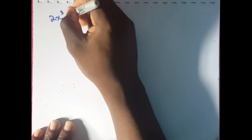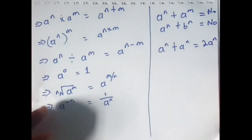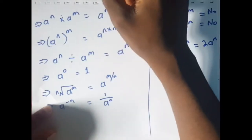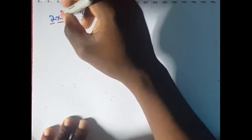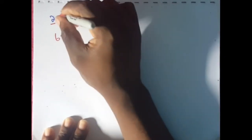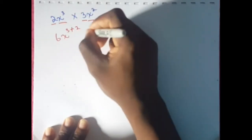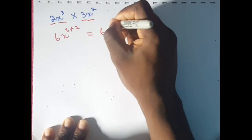Say we are given 2x cubed and we are to multiply it by 3x squared. From the laws of indices, you would add the powers once they have the same base. Now you might be saying this doesn't have the same base, but it does — x is the base and 3 and 2 are coefficients of the base. So since they have the same base, we multiply the coefficients. We would have 6, then write back the base x raised to the power of 3 plus 2, which would be equal to 6x raised to the power of 5.